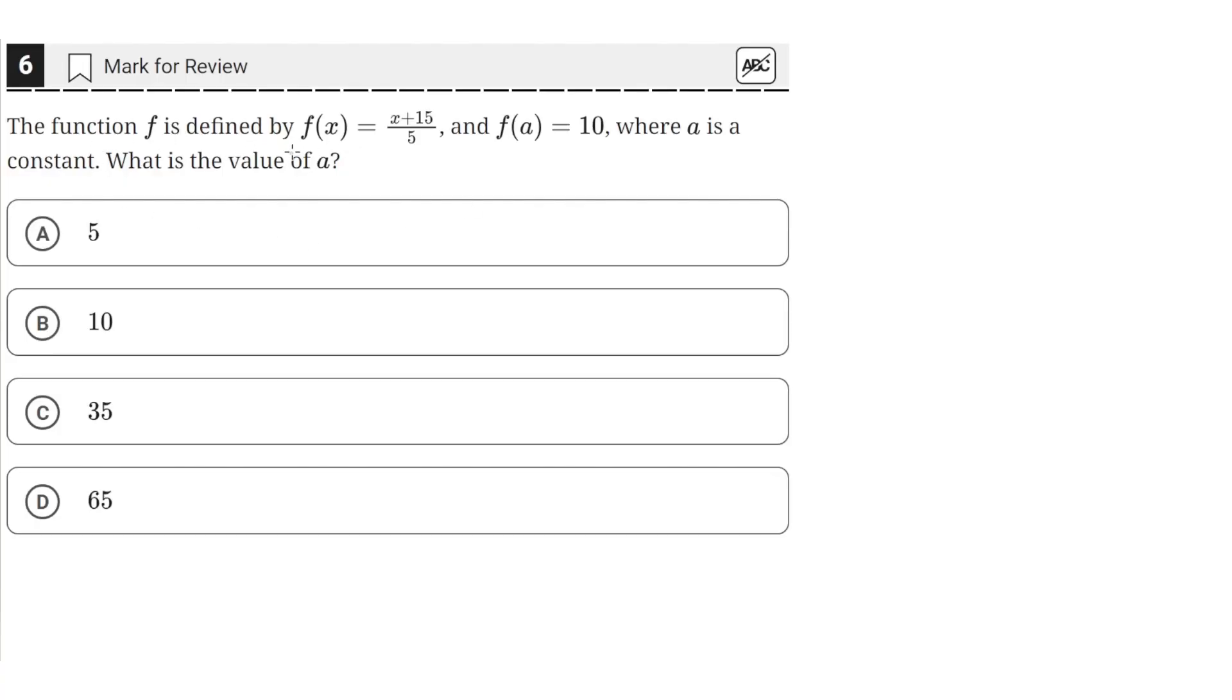The function f is defined by f of x equals x plus 15 over 5, and f of a equals 10, where a is a constant. What is the value of a?